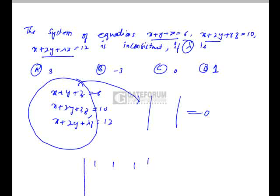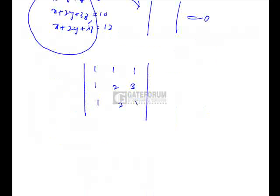So, the coefficients are 1, 1, 1, then 1, 2, 3, 1, 2, lambda equals 0.